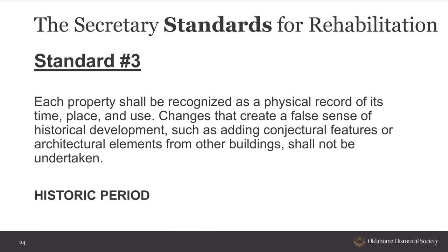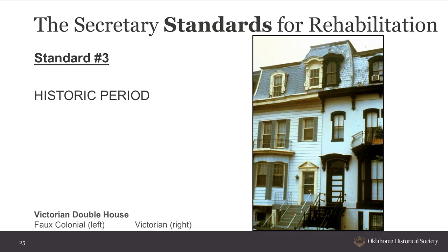Standard 3: Each property shall be recognized as a physical record of its time, place, and use. Changes that create a false sense of historical development, such as adding conjectural features or architectural elements from other buildings or historic periods, shall not be undertaken. You don't want to fake history. Each building is unique and is assessed against itself and how it communicates its story. One half of a Victorian double house was 'earlied up' with faux colonial features while the other retains its mid-19th century appearance — this does not meet Standard 3.